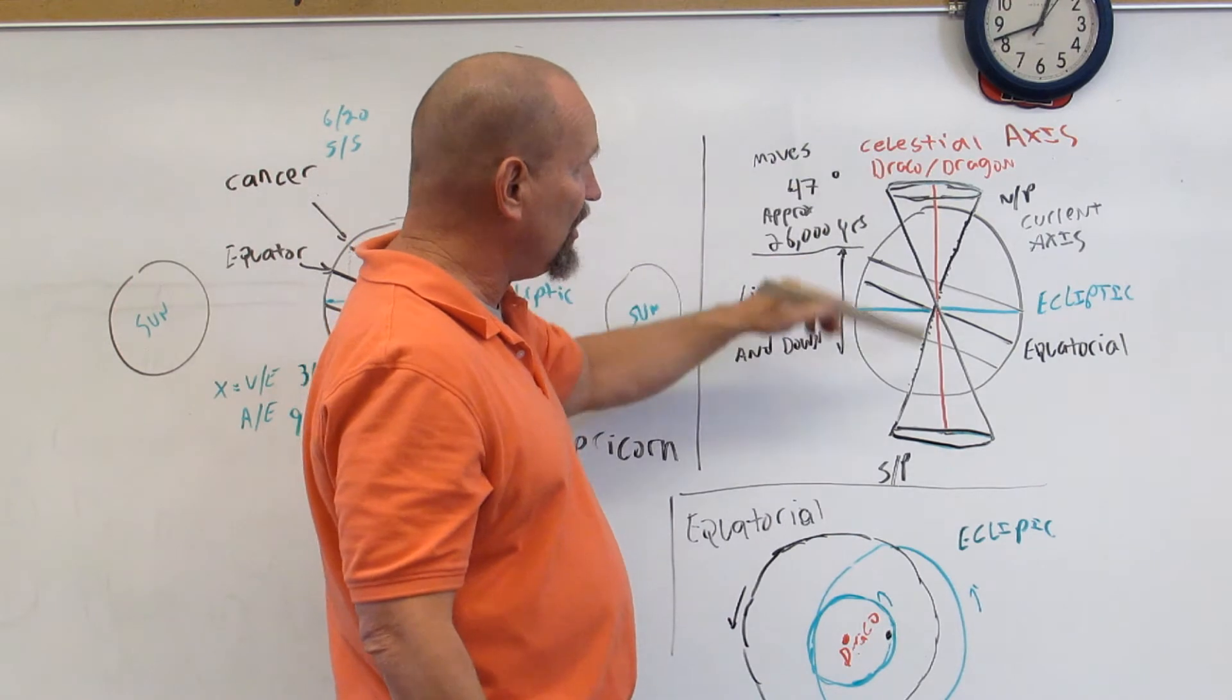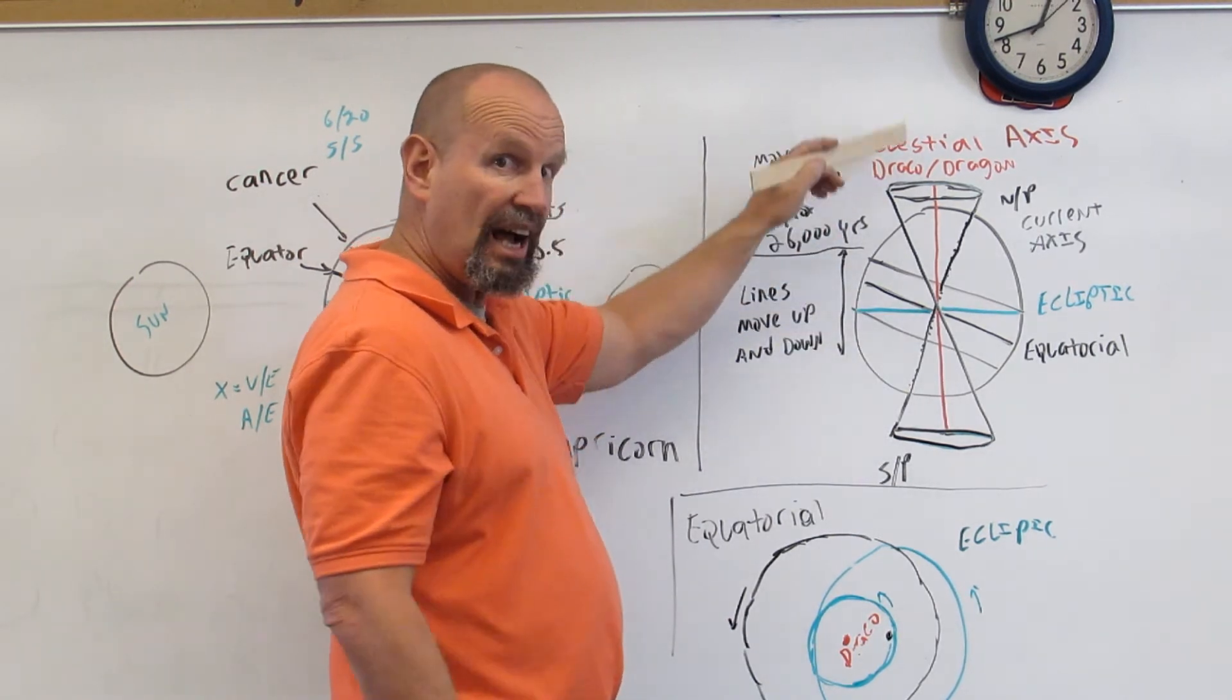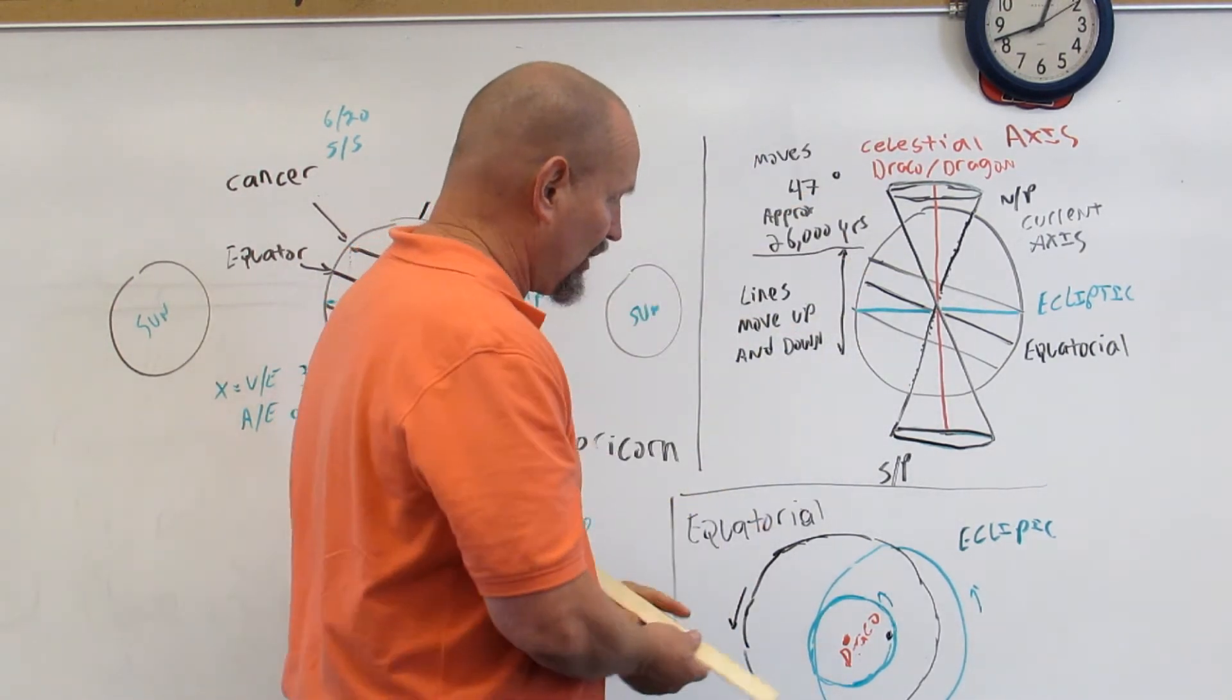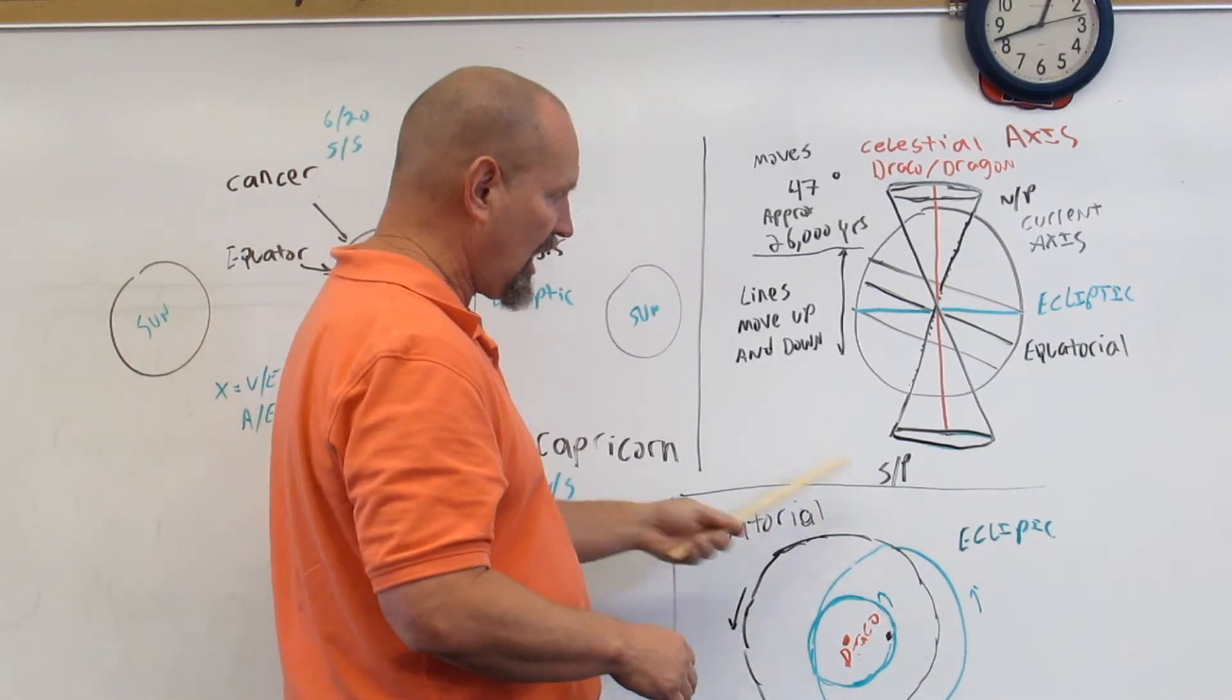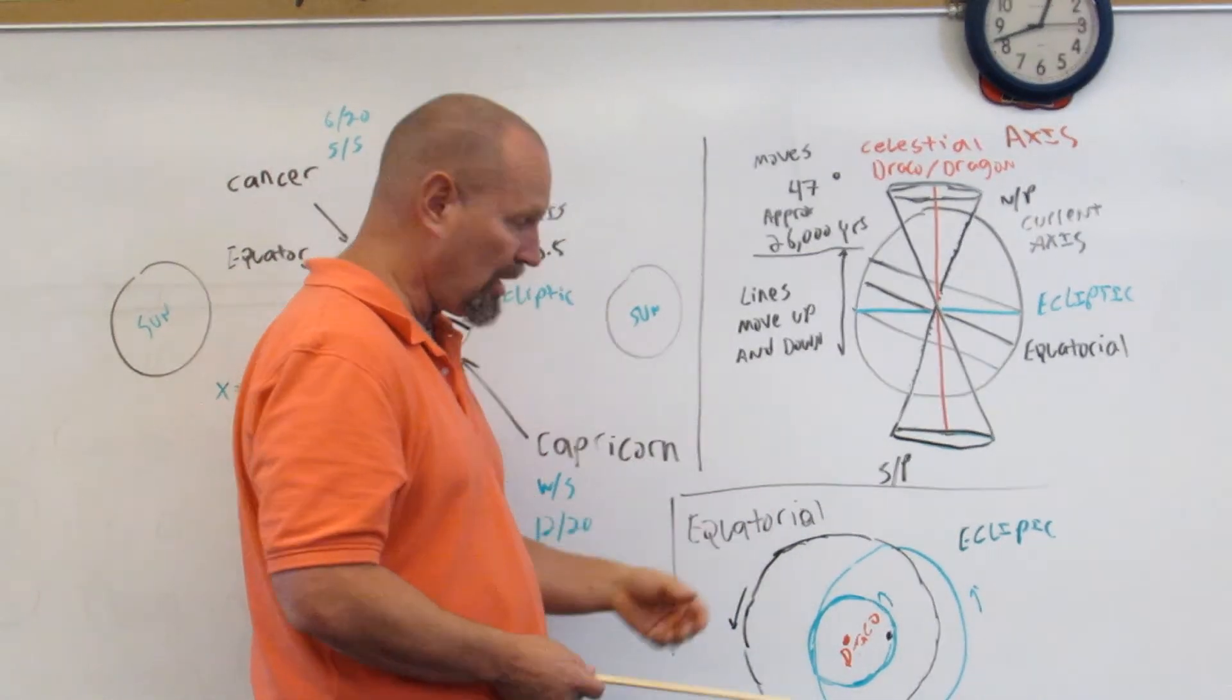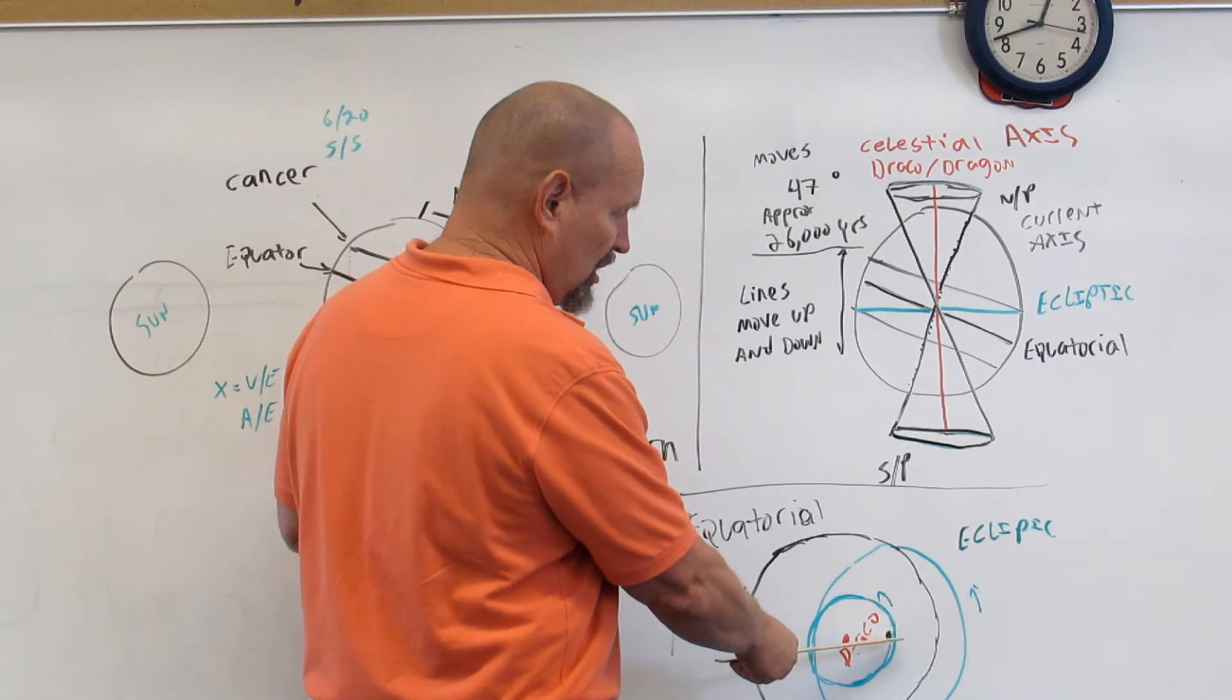If you were to actually take this hourglass shape right here and kind of look down through it or look up through it, you kind of see something like this if you were to draw it out. This is our current axis represented here.